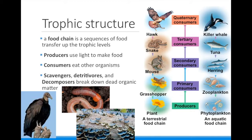Another term for producers is autotrophs. 'Auto' means self, and 'troph' again means food. On the right, we can see two different food chains. The terrestrial, or land, producer is the flowering plant, and the aquatic producer is plankton in the water.